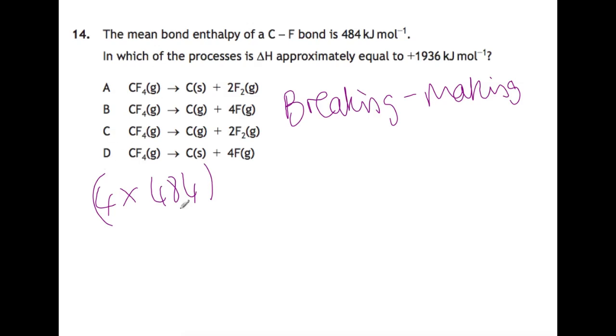So for all of these reactions here, you're going to have four times the value they give you in the question, which is 484. For the first one, we're going to have this as our breaking, and then we've got carbon as a solid—you would use the graphite value for that one, which is 716—plus two times the fluorine value, which is 159. If you do this minus all of this, then you get 902. For this one here, all you've done is break this up—you haven't made any new bonds—so if you do 4 times 484, you get 1936, so B is your answer.